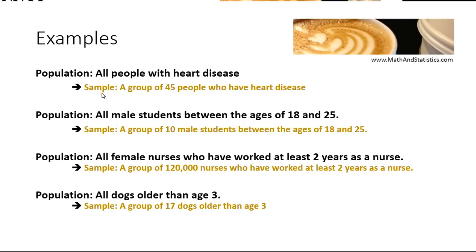A sample is a collection or a subset from that population, and that's the main difference between the two. In research, we generally use samples to perform our research, and then we use the results to make inferences about the population. The reason for that is most of the time populations are enormous, and there would be no feasible way to do research, collect data, or perform analysis on the entire population. That is why in statistics, it is generally known that sampling is used.